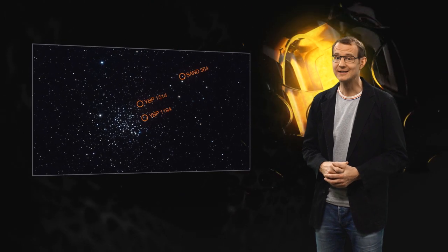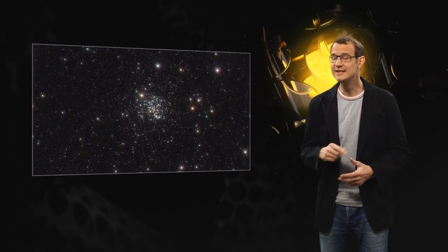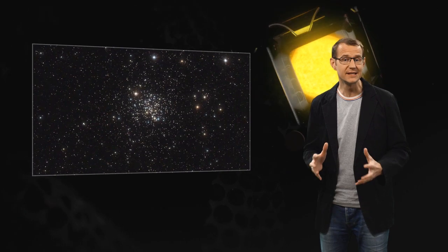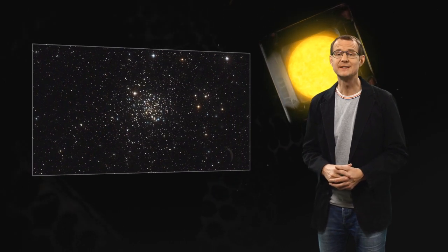But this finding is in fact a little unusual, because these three planets orbit stars inside a cluster of stars known as Messier 67.